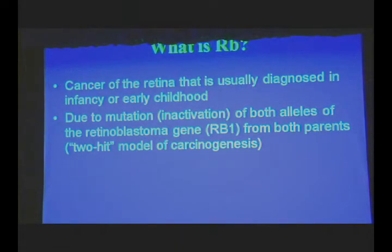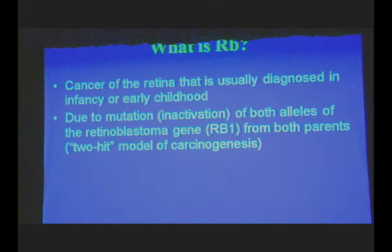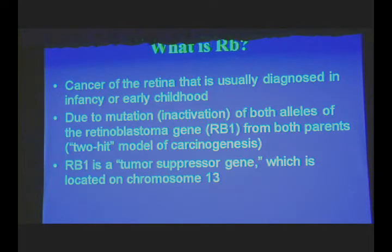It's due to a mutation, basically an inactivation of both alleles of the retinoblastoma gene, which is called RB1, which comes from both parents. This is what's often in the epidemiology literature — I'm an epidemiologist — called the two-hit model of carcinogenesis. It basically takes two hits, two inactivations, to create this disease. In that sense, it's a genetic disease.